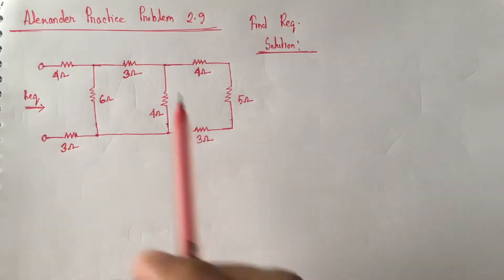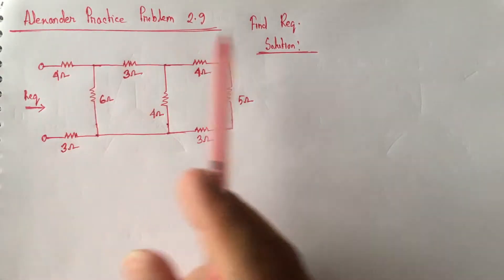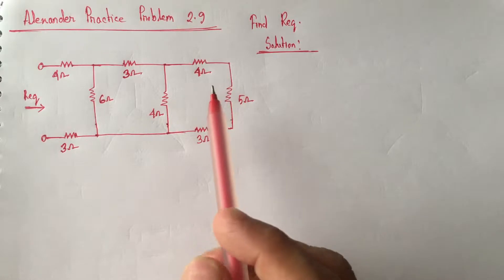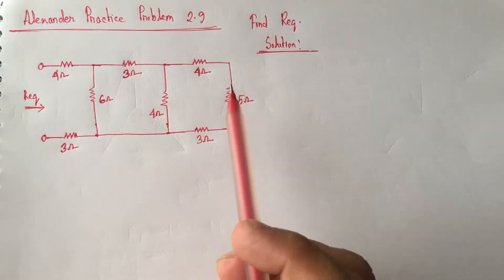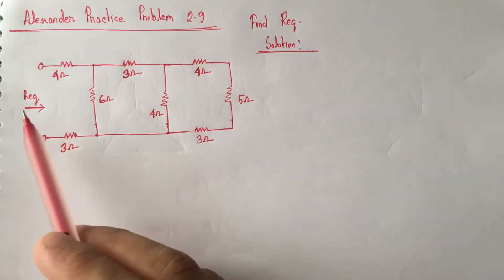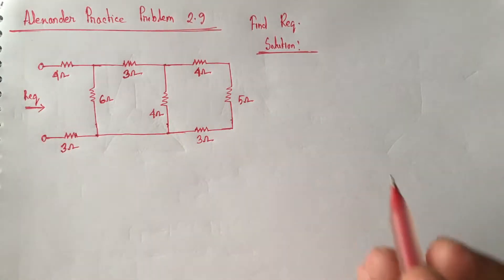Hi viewers, today we will solve practice problem 2.9 from Alexander. This is a series-parallel resistance equivalent circuit problem. Here we have to identify an equivalent for the circuit.